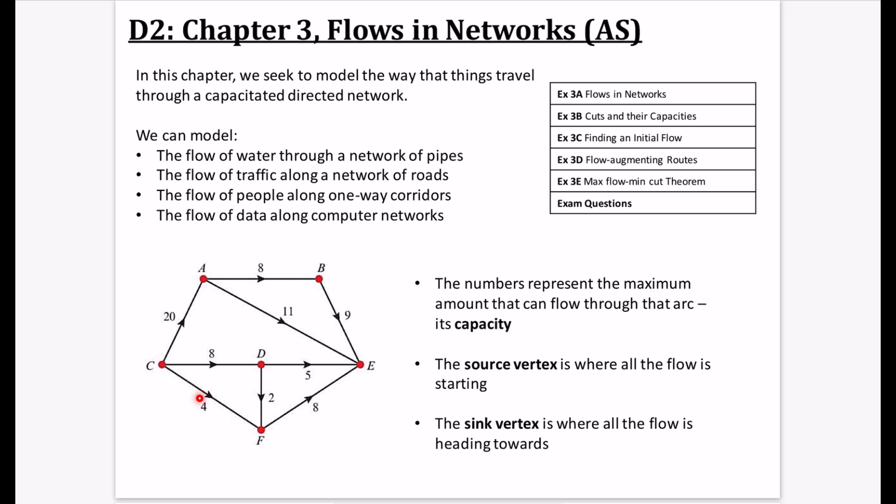That literally means it's a network with directions in it — because it's directed. And capacitated means that each of the different arcs or edges — I'm probably going to use both of those words — have a maximum capacity that can flow through them.